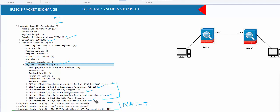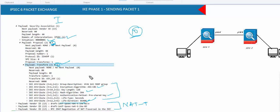The initiator sends all configured policies to the responder in the first packet. If there are multiple ISAKMP policies — say 10 policies — the proposal number will be set to 10, meaning the payload contains 10 transform sets. All transforms are listed: transform number 1, then transform number 2, and so on.